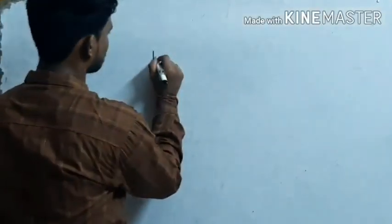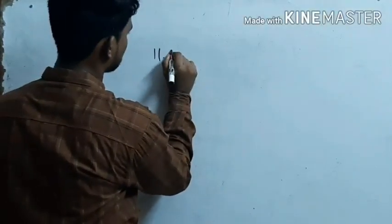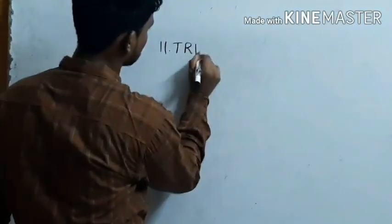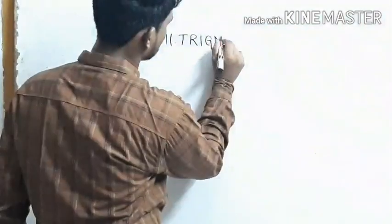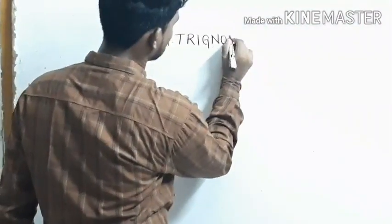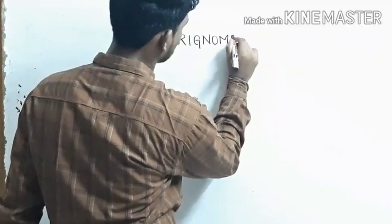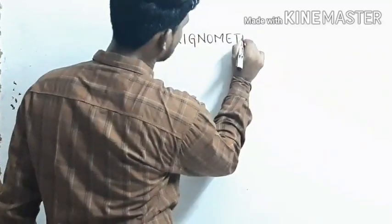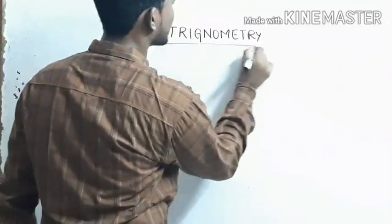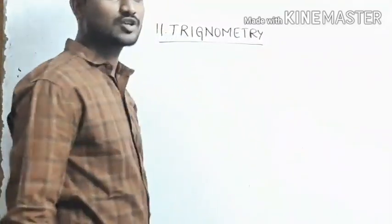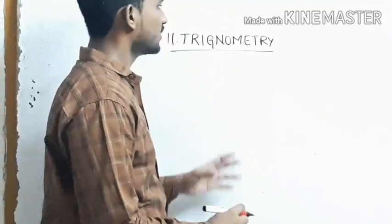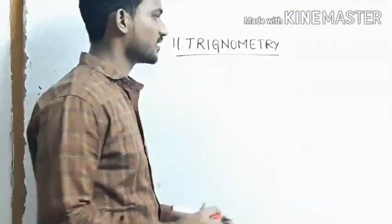This is Ayushad Rajiv. Today we will discuss about the 11th chapter of the class, that is Trigonometry. Trigonometry is a branch of mathematics. It deals with the lengths and angles of a triangle.